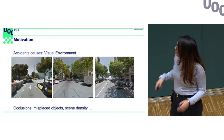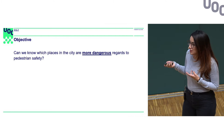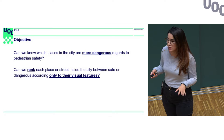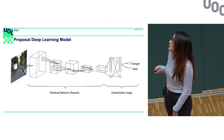The objective of this project is: can we know which places in the city are more dangerous with regards to pedestrian safety? More specifically, can we rank each place as safe or dangerous according only to its visual features? To do this, we are going to use an artificial intelligence method called a deep learning model.